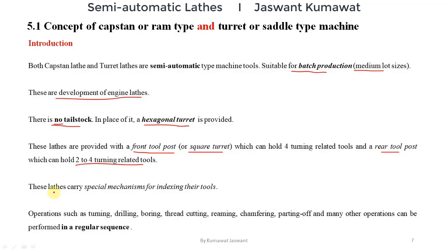These lathes are equipped with a special mechanism for indexing the tools. On this machine we can perform turning, drilling, boring, thread cutting, reaming, tapping, parting off, and many other operations. These are performed in a particular sequence. We can perform a number of operations on capstan and turret lathes by using different types of cutting tools.